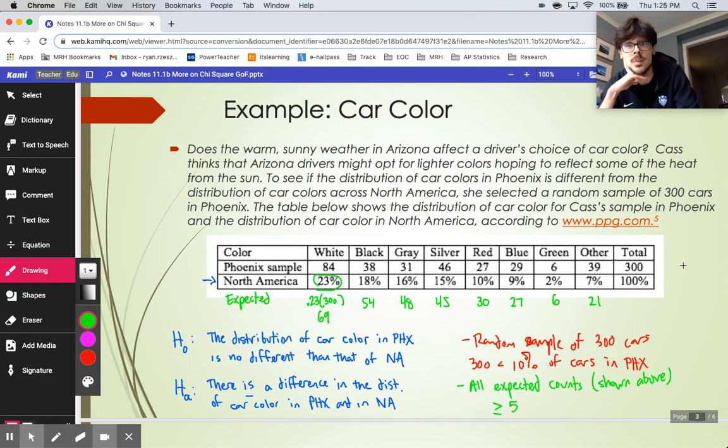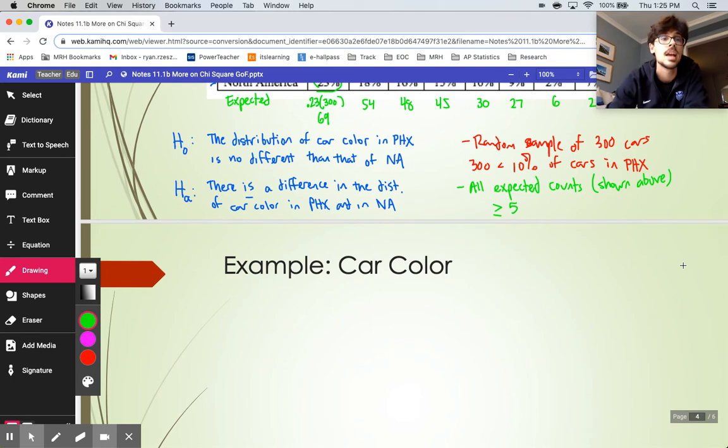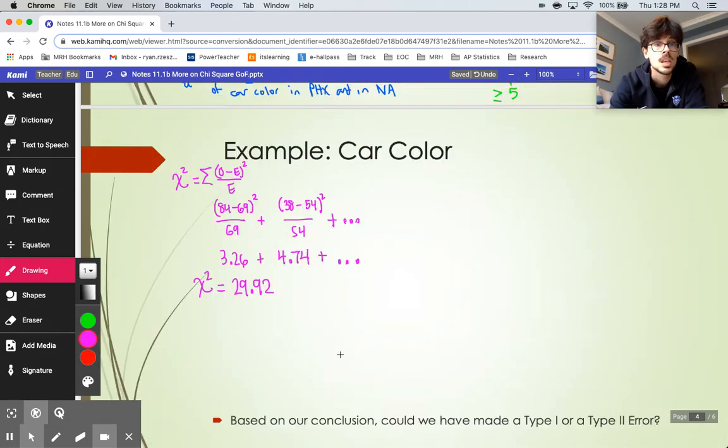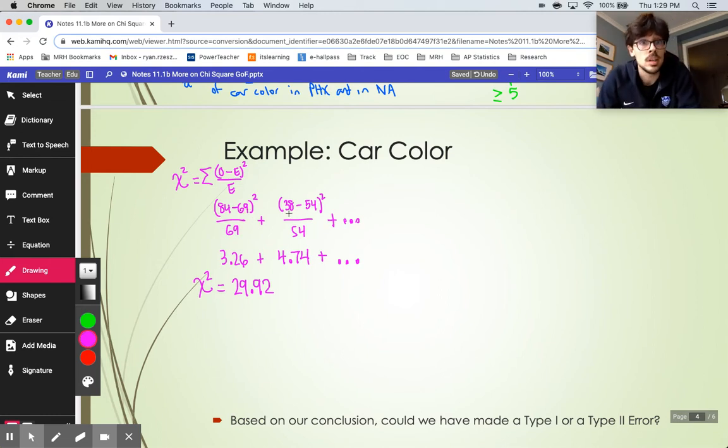So the next move is going to be actually doing our calculations. That's going to mean for our do step, we're going to find our test statistic and calculate that guy like we've been doing by doing observed minus expected squared divided by expected and adding all of those up. Do that for at least the first two colors. So I'm back with the first two terms right here. You can see my work shown, observed minus expected squared. You get like a 3.26 for your first term and a 4.74 for your second term, and you would just keep on adding those up, all eight of them.